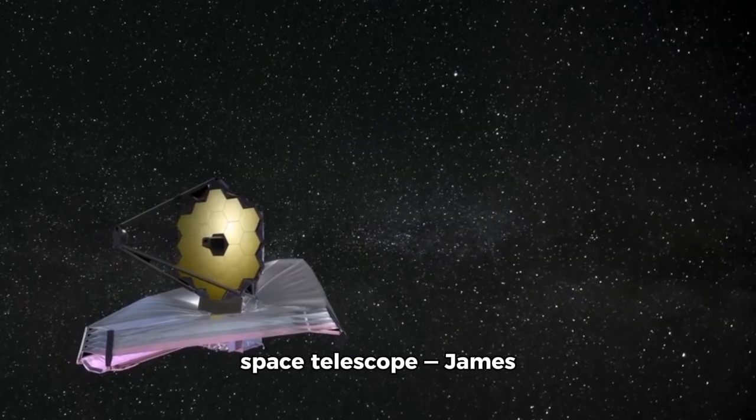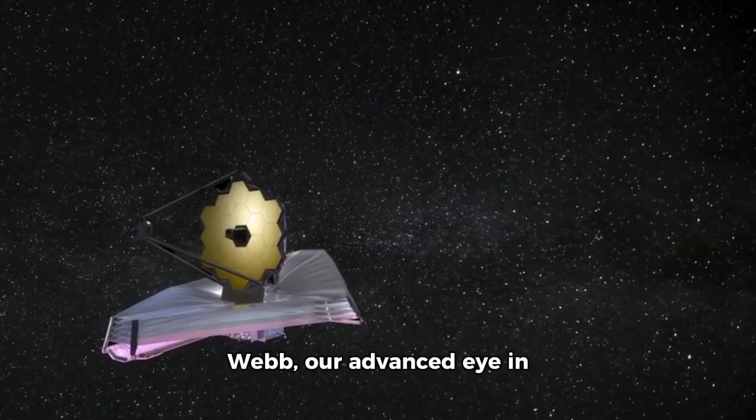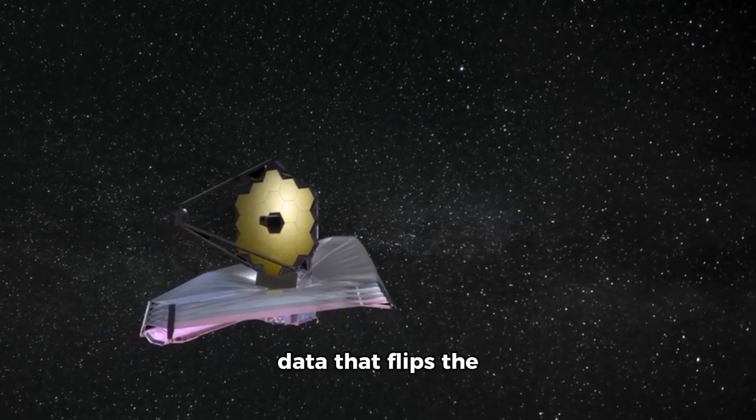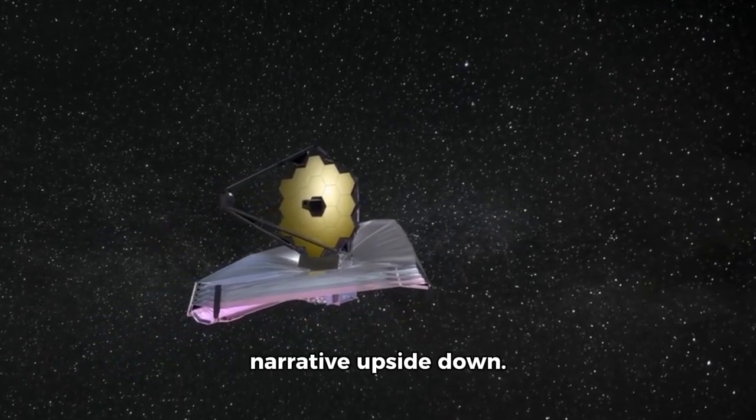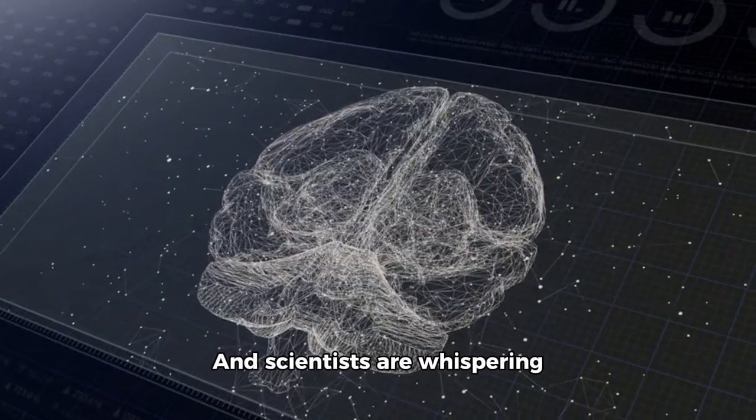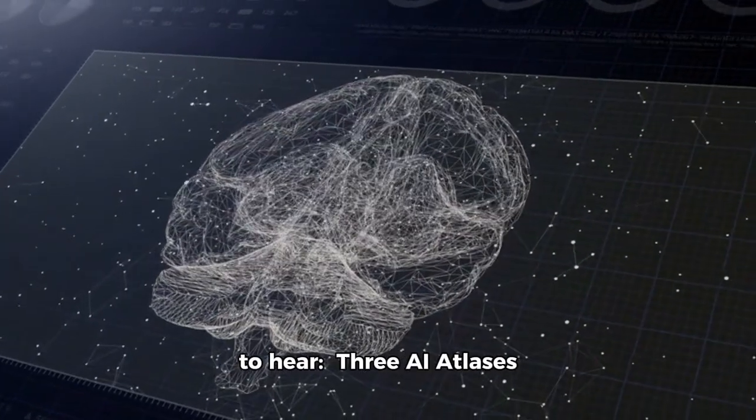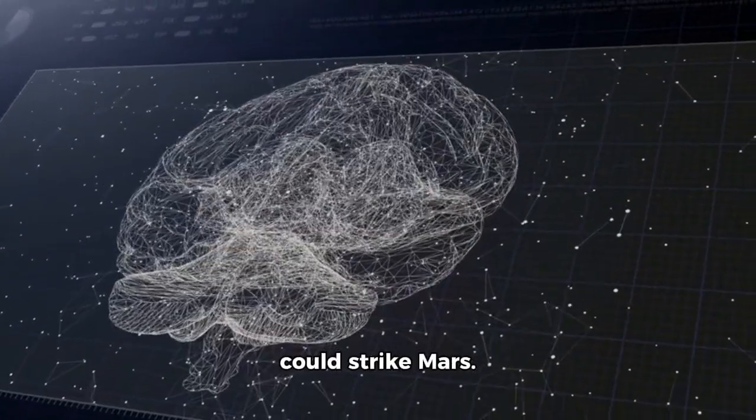Now, our most powerful space telescope, James Webb, our advanced eye in the void, has delivered data that flips the narrative upside down. The numbers have changed, the trajectory has shifted, and scientists are whispering the one thing no one wanted to hear: 3E Atlas could strike Mars.